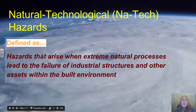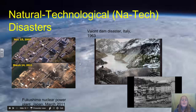We also have a crossover of both natural and technological disasters, which we call NATECH disasters. These are hazards that arise when extreme natural processes lead to the failure of industrial structures and other assets within the built environment. The classic example is the Fukushima nuclear reactor, where a severe earthquake off the east coast of Japan led to a tsunami that hit the Fukushima reactor along the coast, damaging and destroying a couple of the reactors.